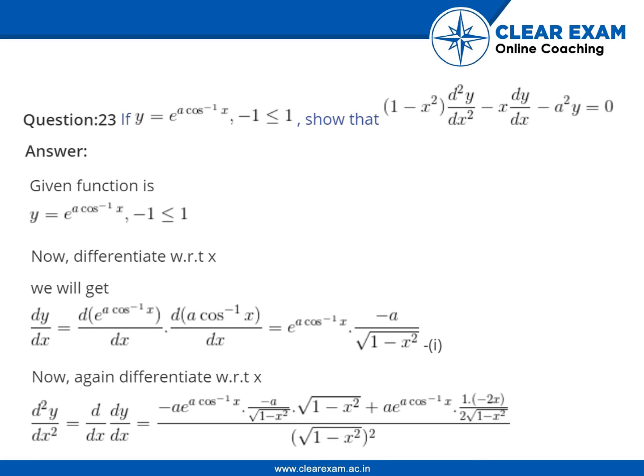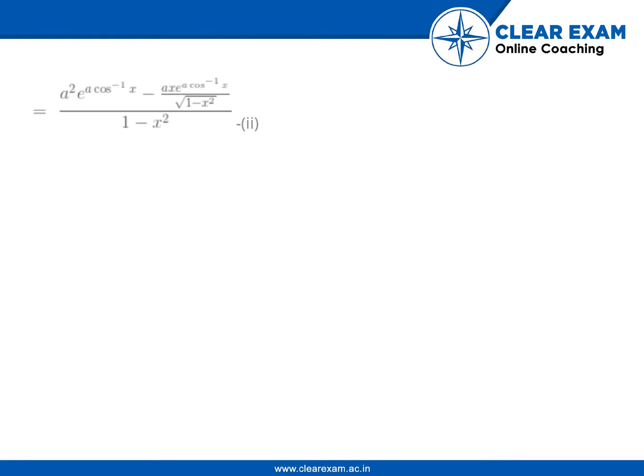Now again differentiating with respect to x, d square y by dx square is equal to d by dx of dy by dx, which is equal to minus a into e to the power a cos inverse x into minus a upon under root of 1 minus x square, into under root of 1 minus x square, plus a into e to the power a cos inverse x into 1 into minus 2x upon 2 under root of 1 minus x square, upon 1 minus x square, which is equal to a square e to the power a cos inverse x minus a x e to the power a cos inverse x upon under root of 1 minus x square, upon 1 minus x square. Let it be equation 2.